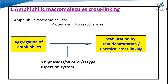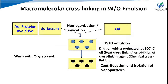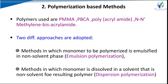In the amphiphilic macromolecule cross-linking method, amphiphilic macromolecules like polysaccharides and proteins are used, forming oil-in-water or water-in-oil type dispersion systems stabilized by chemical cross-linking or heat treatment to yield small nanoparticles. In the macromolecular cross-linking in water-in-oil emulsion method, aqueous protein and surfactants in an oil base are homogenized and sonicated to form a water-in-oil emulsion, followed by heat or chemical cross-linking and centrifugation/filtration to isolate nanoparticles.